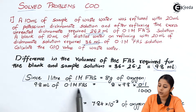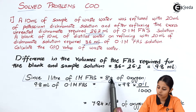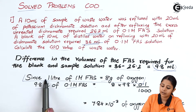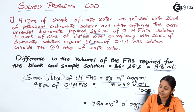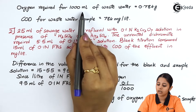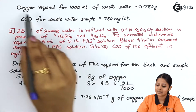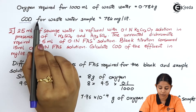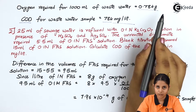For 9.8 ml of 0.1 molar FAS solution, we multiply: 9.8 × 8 × 0.1 divided by 1000 ml, giving 7.84 × 10⁻³ grams of oxygen for 10 ml sample. Therefore, oxygen required for 1000 ml of waste water is 0.784 grams, so the COD is 784 mg per litre.